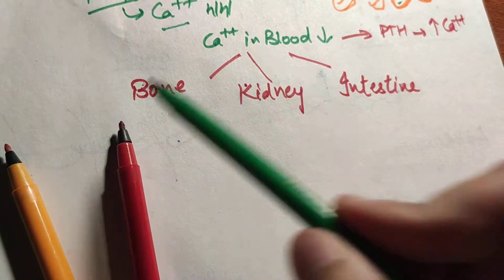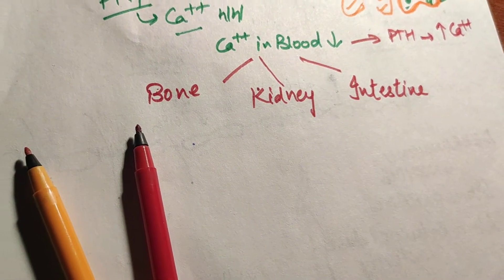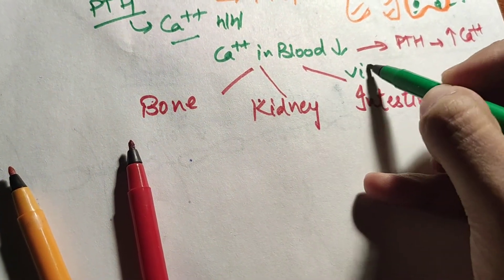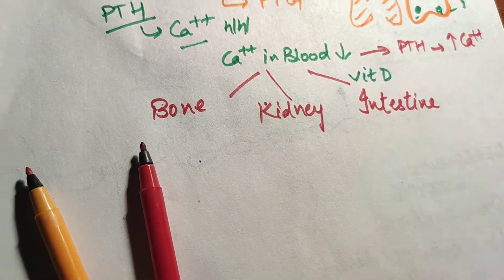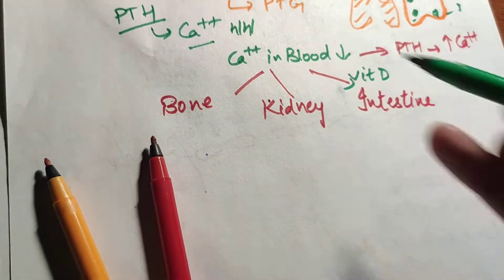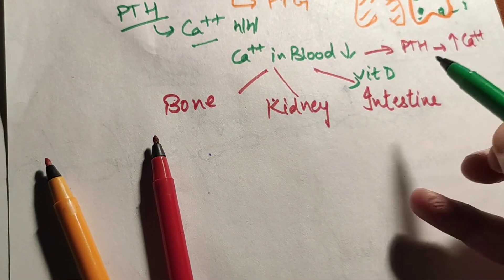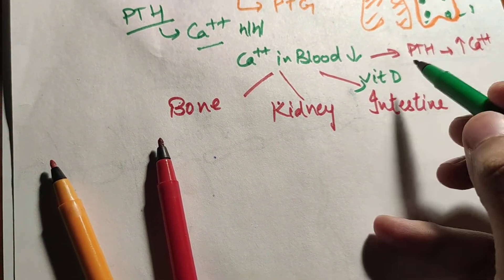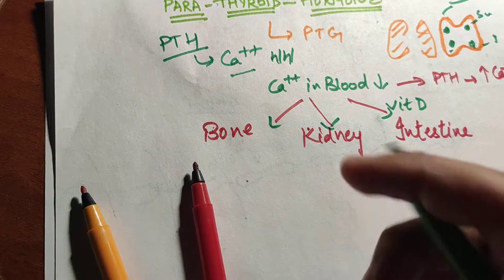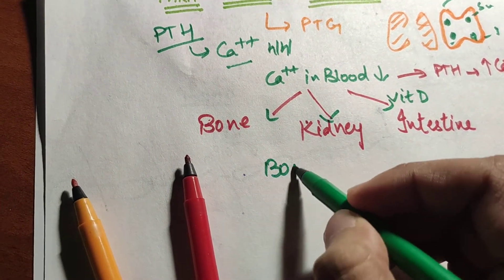PTH acts directly on bone and kidney, but on the intestine it acts indirectly via Vitamin D — it does not act directly on the intestine.